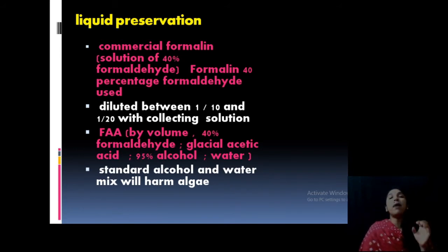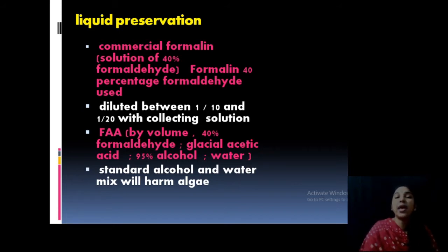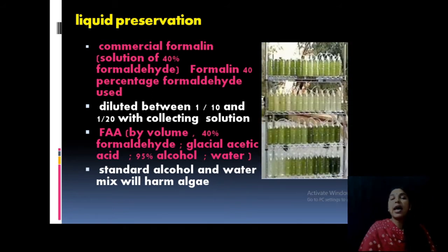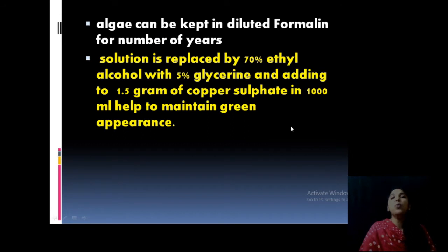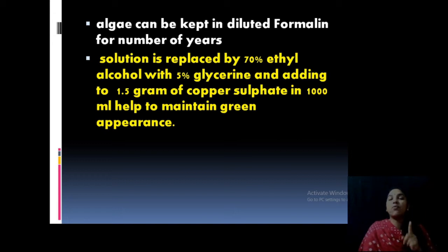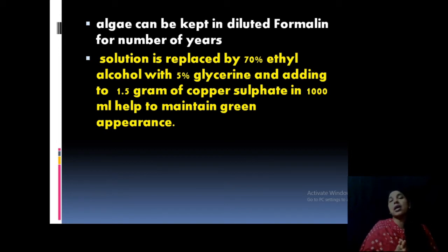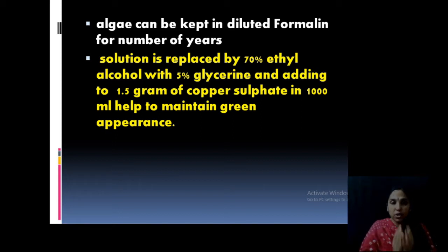Many laboratory people use alcohol and water mixed, but that usually spoils and destroys algae. So FAA or 40% formaldehyde and its dilution is very good for algae preservation. After that, you can arrange them in the laboratory. Algae can be kept in diluted formalin for many years, and solutions may be replaced by ethyl alcohol with glycerin. You can add 1.5 grams of copper sulfate, because copper sulfate retains the original green color of the algae. Just add a pinch of copper sulfate into the liquid preserving solution and that will maintain the color of the algae.